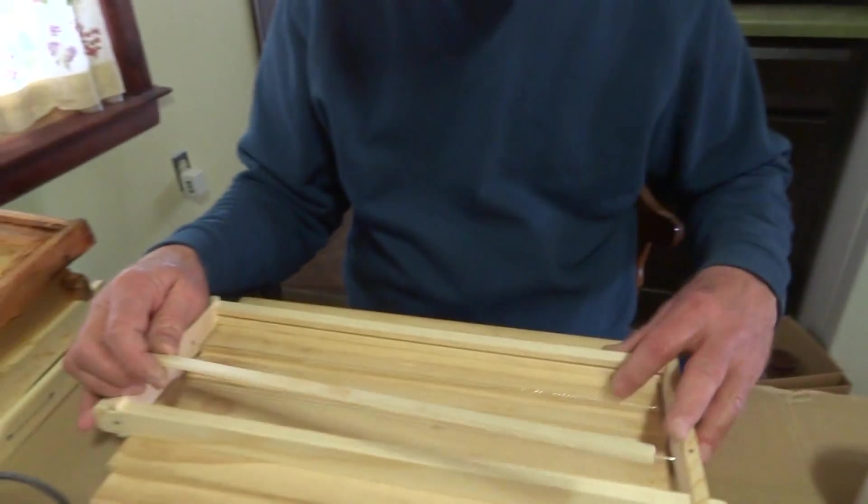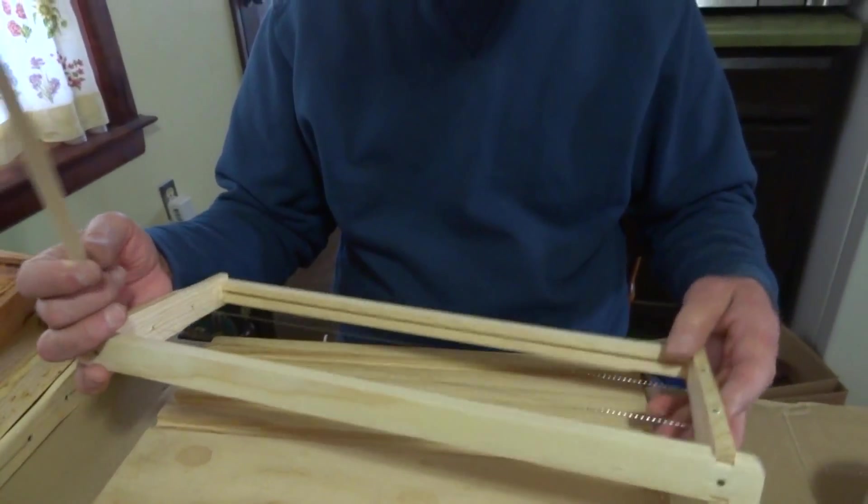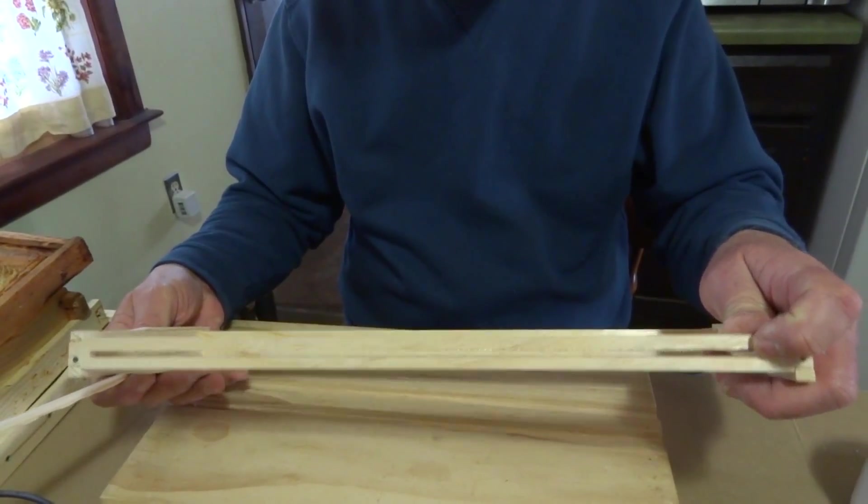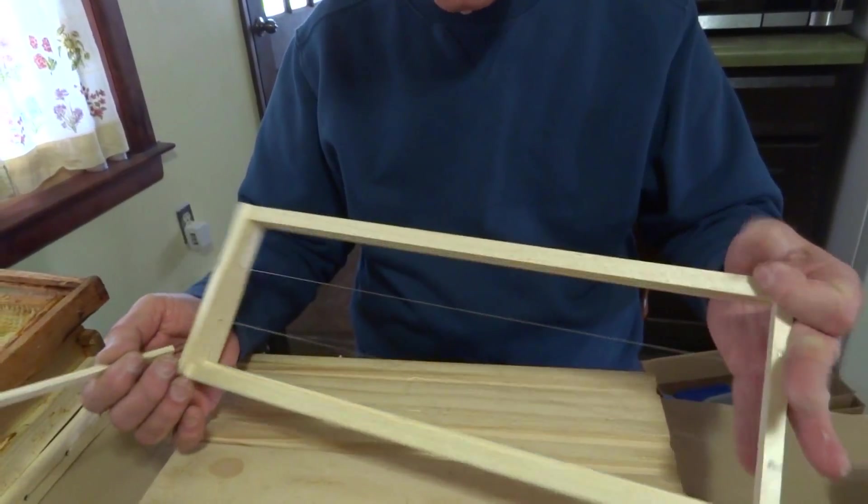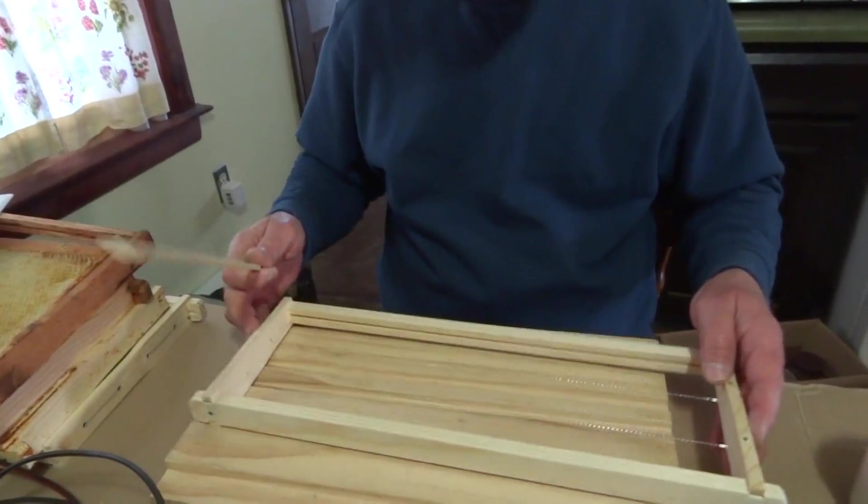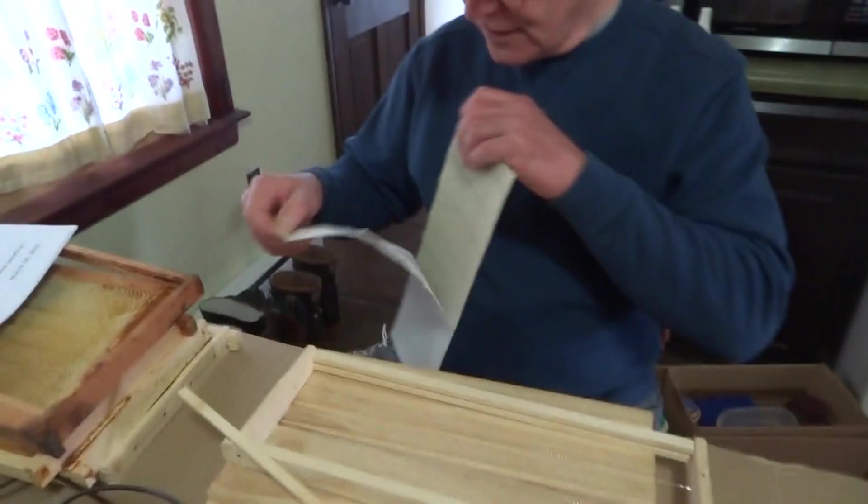As you remember, we're going to pop these wedges out. The type of frame that we're using is wedge top and split bottom or divided bottoms. But the reason for the divided bottom, which is kind of important as you'll see, is for the wax foundation, you peel off the paper.